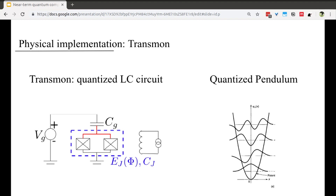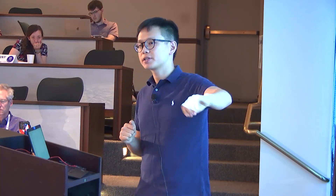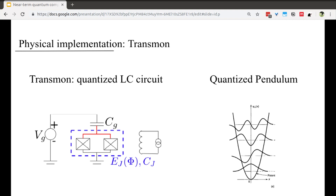Each energy level corresponds to a different wave function in position space. By using a Josephson junction, we slightly shift the energy levels so that the energy difference between each level is slightly different. This allows us to selectively drive the qubit to jump between certain levels. The lowest two levels — zero and one — serve as the qubit. We can also use higher levels if we want to implement qutrits or qudits.